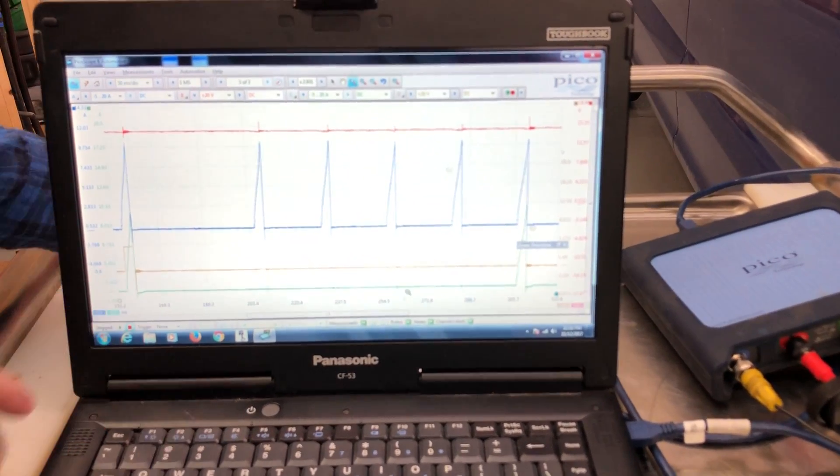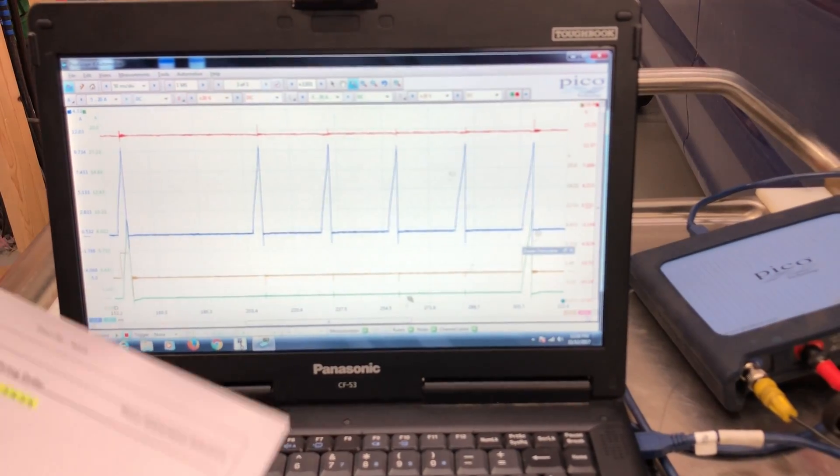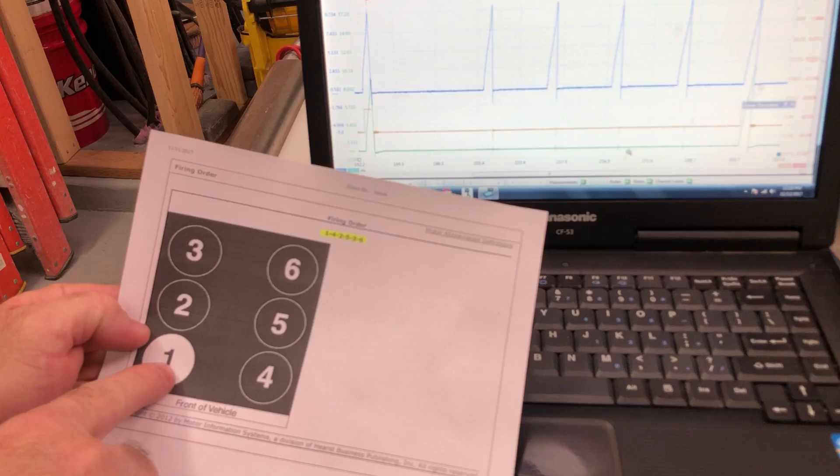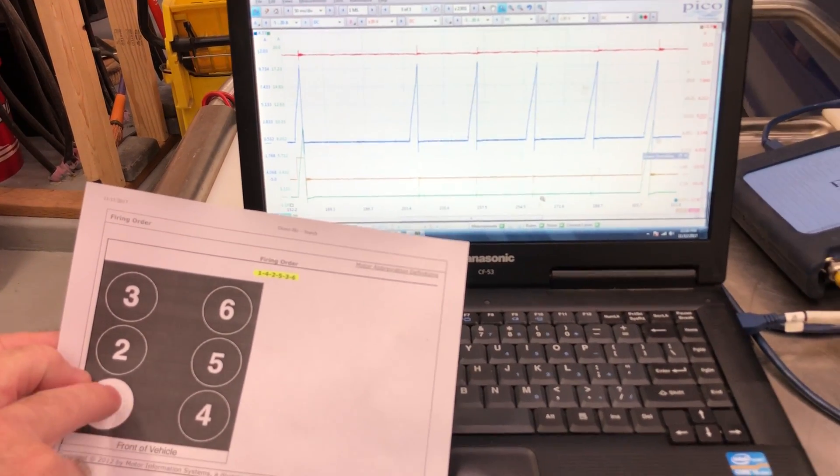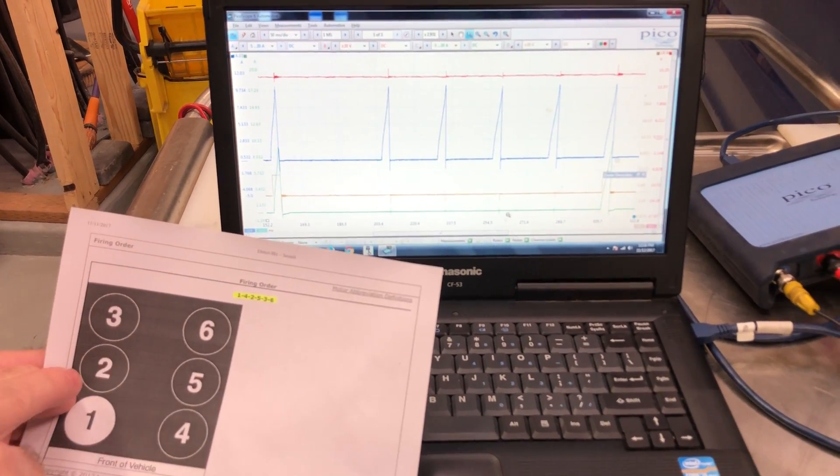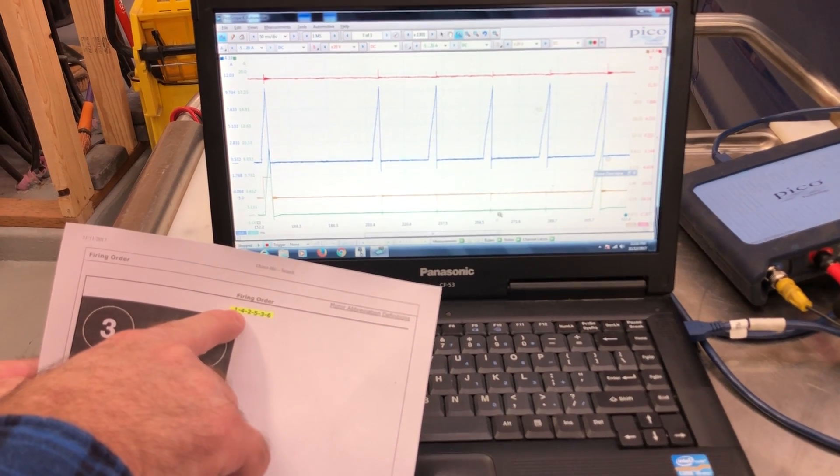And so we have—this is number one. You get yourself the firing order. We have our cylinders laid out like this: one, two, three, four, five, six. Pretty standard for Ford.